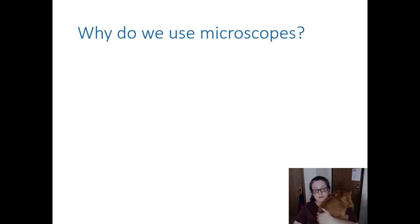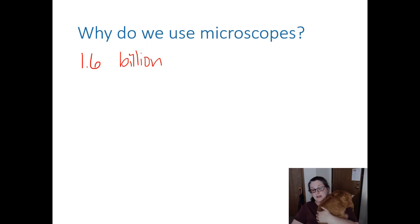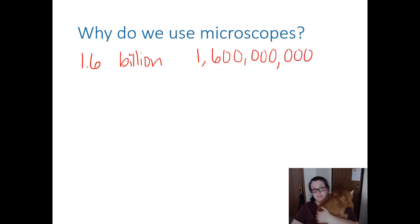So why do we use microscopes? We use microscopes because there are an estimated 1.6 billion species of microorganism — things that we cannot see with our naked eye. This is a very recent estimate as of 2017: 1,600,000,000 separate microorganisms.